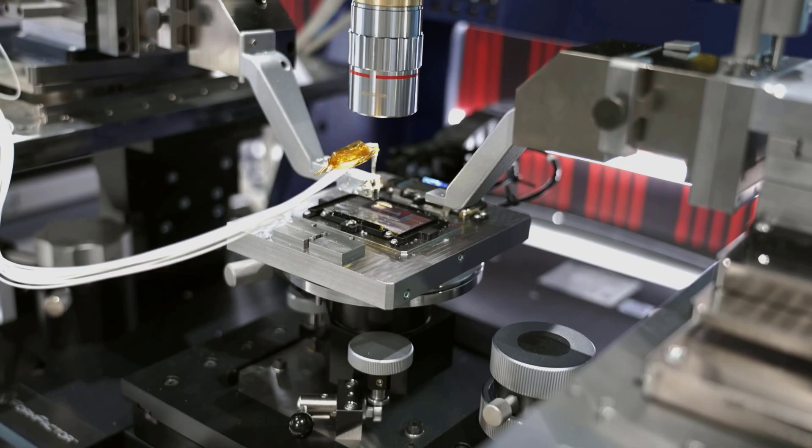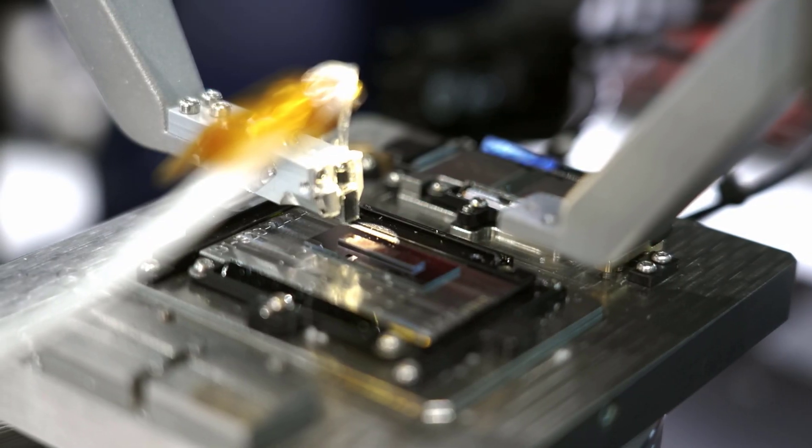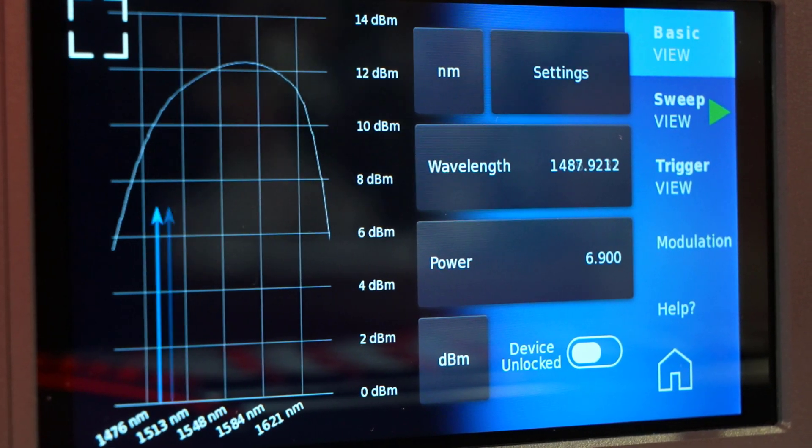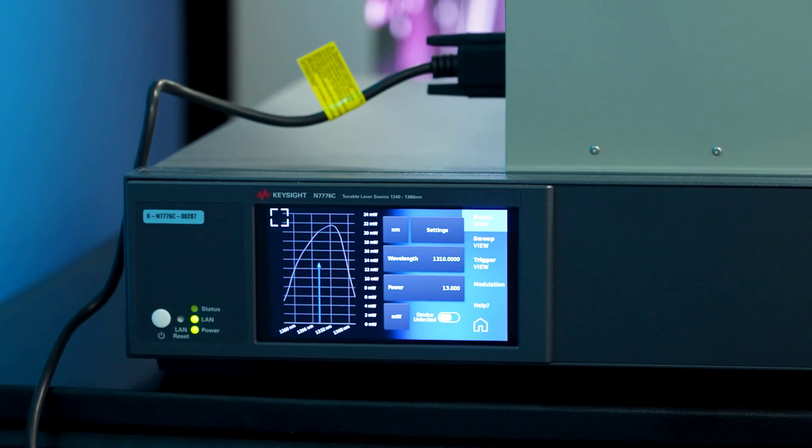For example, it tests micro-ring modulators by measuring spectral resonance, adjusts RF signal bias and temperature to measure RF frequency response up to 110 gigahertz. Instruments like the tunable laser source, lightwave component analyzer, and several other photonic tools help with the test.